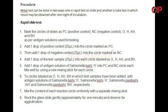Mix well by using a new mixing stick for each circle. Step six: to circles labeled as O, H, AH, and BH in which test samples have been added, add antigen solutions of Salmonella typhi O, Salmonella typhi H, Salmonella paratyphi AH, and Salmonella paratyphi BH respectively. Step seven: mix the content of each reaction circle uniformly with a separate mixing stick. Step eight: rock the glass slide gently for approximately one minute and observe for agglutination.